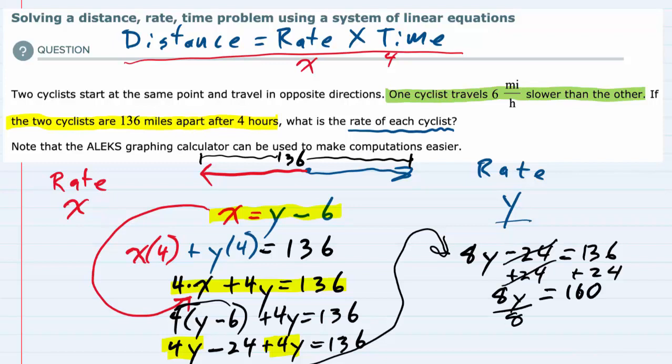Divide both sides by 8. And we have y equals 20. So the rate y here is 20 miles per hour. That's how fast one of the cyclists is going.